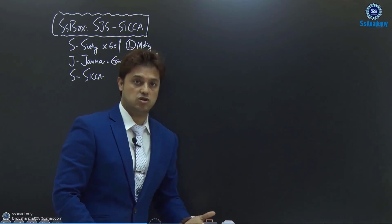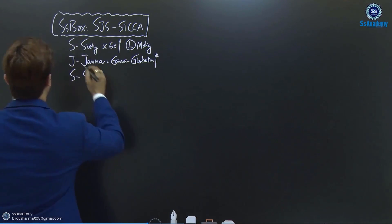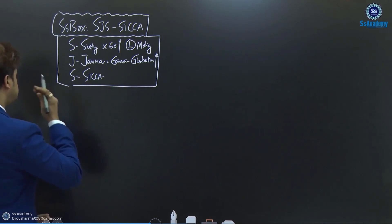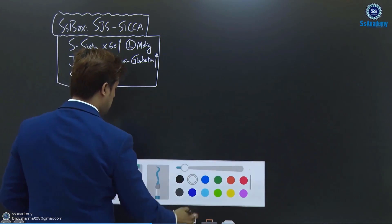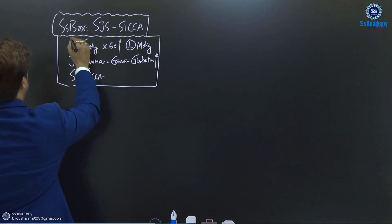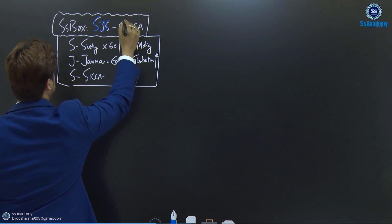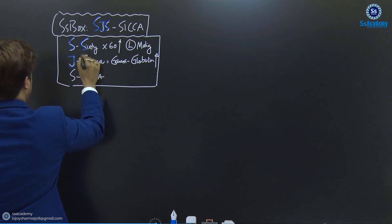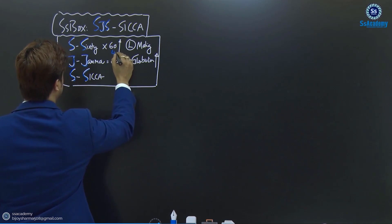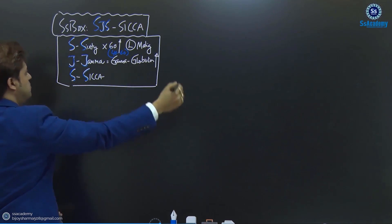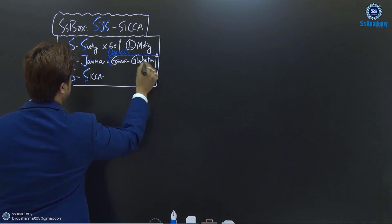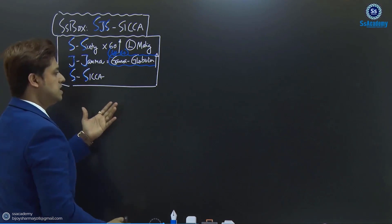I'd like to give another side box here. For gamma globulin — hypergammaglobulinemia. How can you understand hypergammaglobulinemia in the scenario? You'll have the total protein and albumin level given. Simply, if the total protein is increased but albumin is in the normal range, you can understand the globulin level is raised. That means gamma globulin is raised — total protein minus albumin gives you the idea.